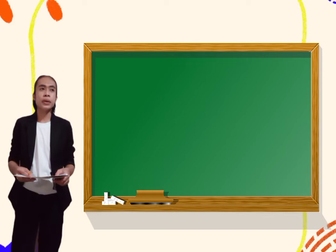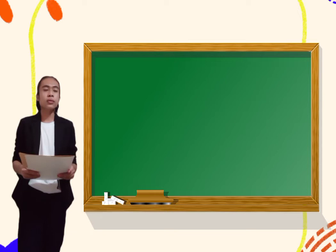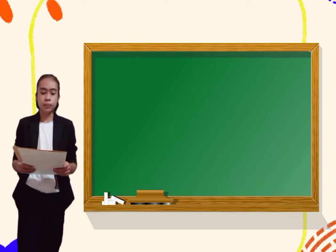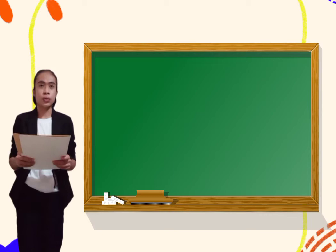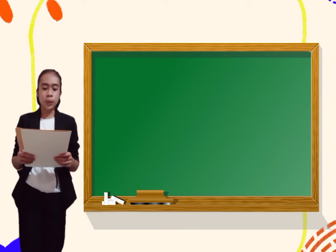Okay, class, get one-fourth sheet of paper and you are going to analyze carefully the question and select your letter of your correct answer. Okay, I read the question twice, so listen carefully. Number one, which of the following dissolves in water? A. Sugar B. Cooking oil C. Sand D. Flower. I repeat. Which of the following dissolves in water? A. Sugar B. Cooking oil C. Sand D. Flower.